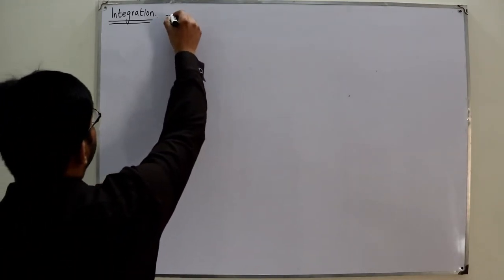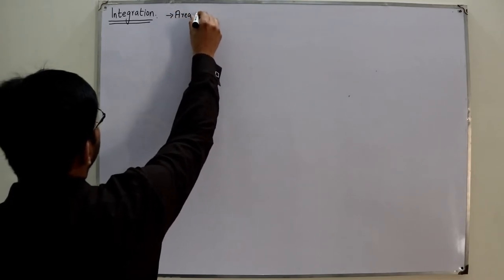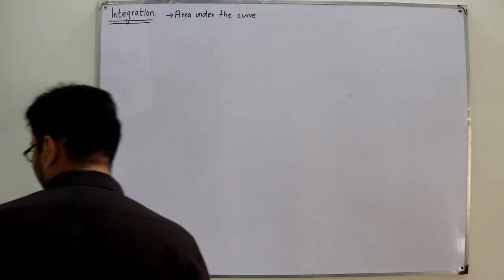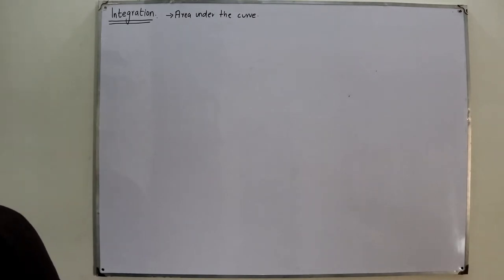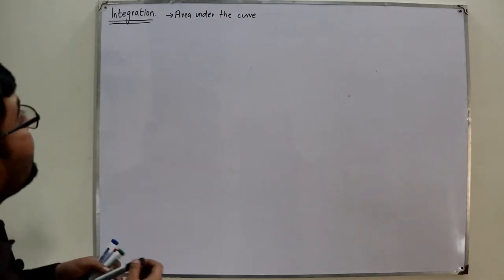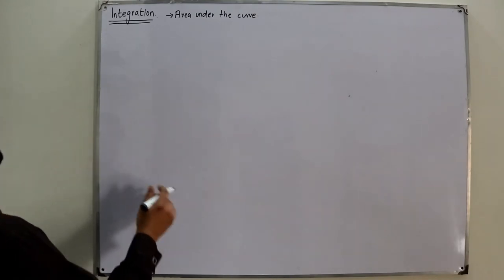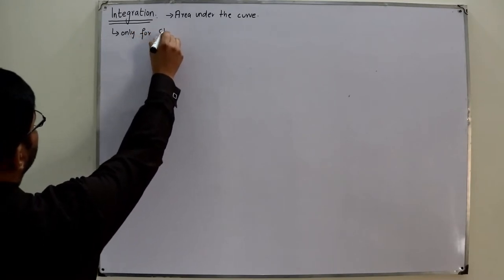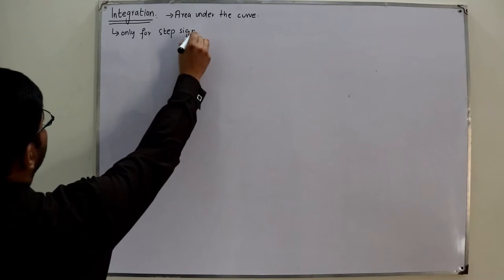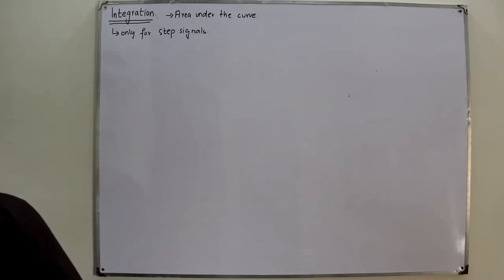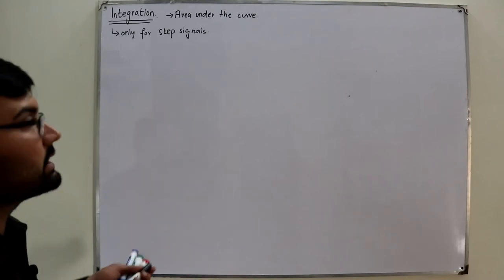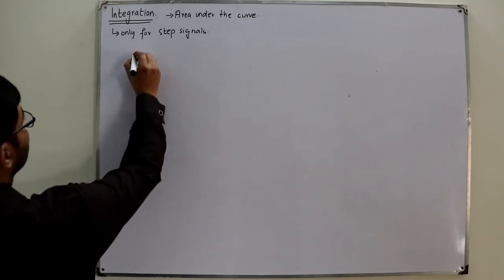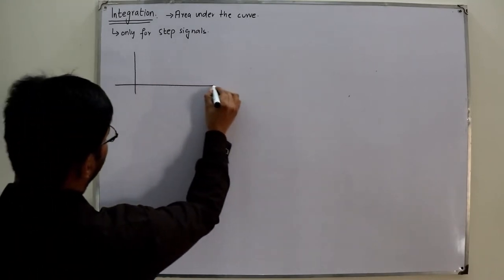Integration is the area under the curve — you know this very well. Now, the graphical method of integration is only limited to step signals. For step signals we use the graphical method, and the final value of the integration continues with the final area. Let us take an example and get through it.